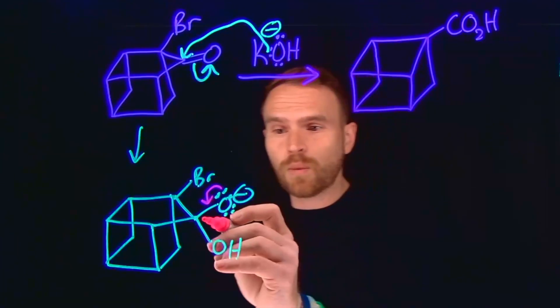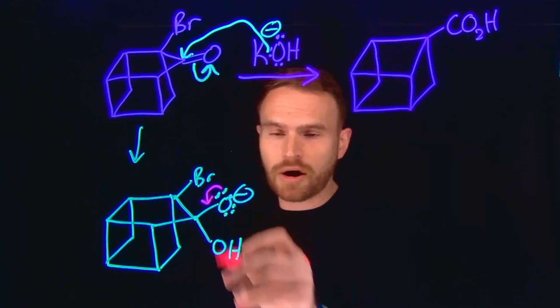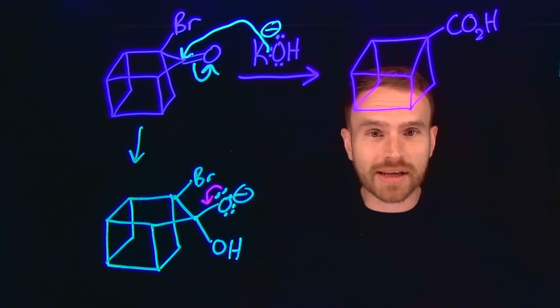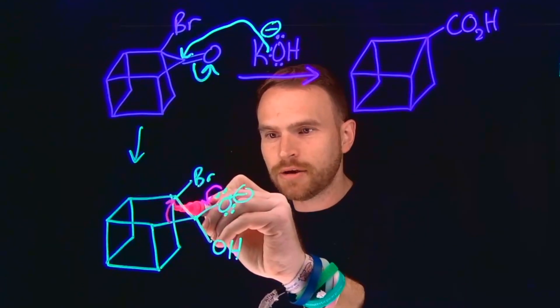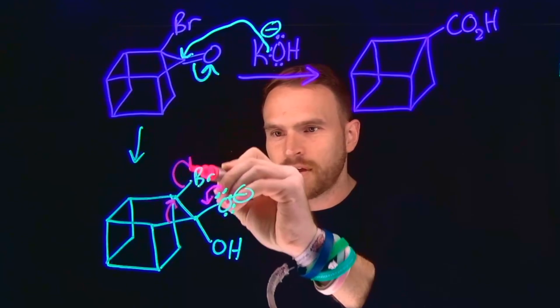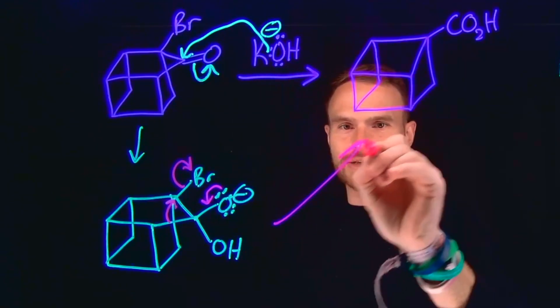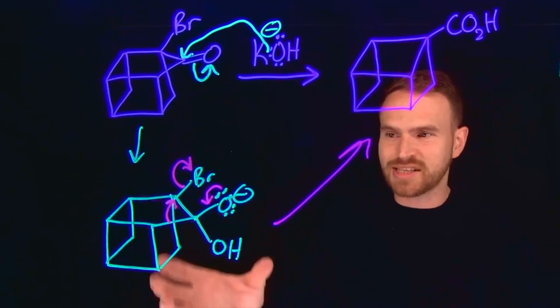That's actually what happens—these electrons go over here, and that is what kicks off the bromide. So that gives us our final product in just these two steps.